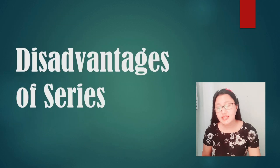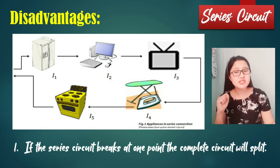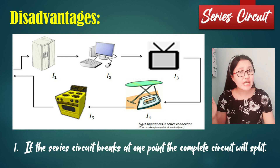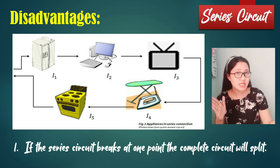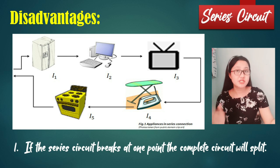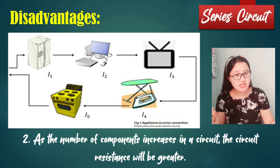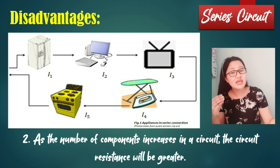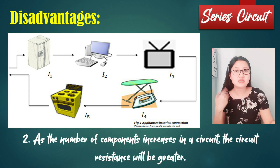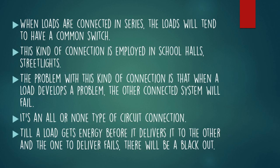For the disadvantages of a series circuit: number one, if the series circuit breaks at one point, the complete circuit will stop working — if one component fails, all are affected. Number two, as the number of components increases, the circuit resistance increases as well. When loads are connected in series with a common switch — as used in school halls and streetlights — when one load develops a problem, the entire connected system will fail. It is an all-or-none type of circuit connection.